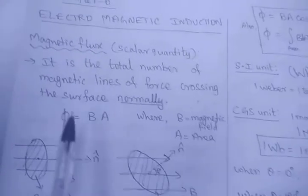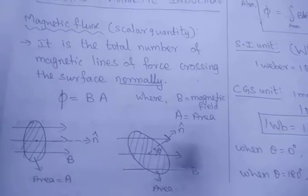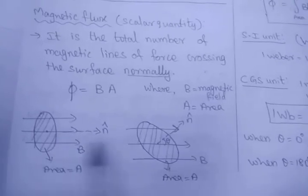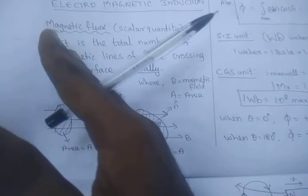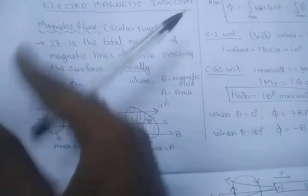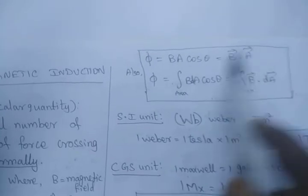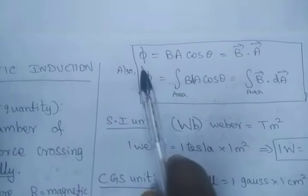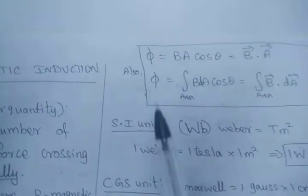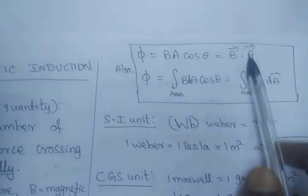Magnetic flux means the number of lines crossing per unit area — that means crossing the surface normally. Always the magnetic lines are passing in the horizontal direction, but the area vector is perpendicular to this surface. So magnetic flux is a scalar quantity, because it is a dot product — a scalar product. The product of two vectors which gives a scalar. Physically, we know that it is a number of magnetic field lines, and number means scalar, so we are using scalar product here.